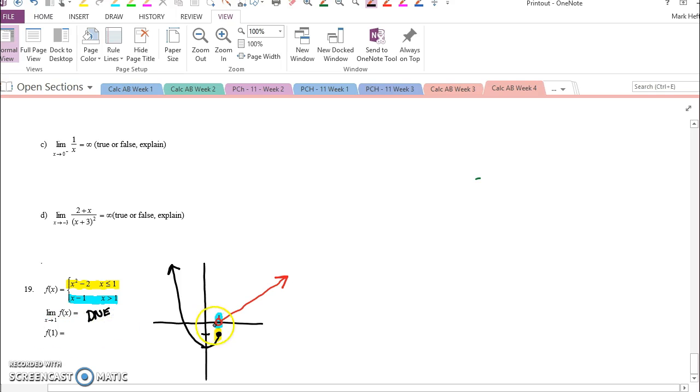But the actual function value at 1 is down here at negative 1. But how could we figure out all of that without drawing the picture?